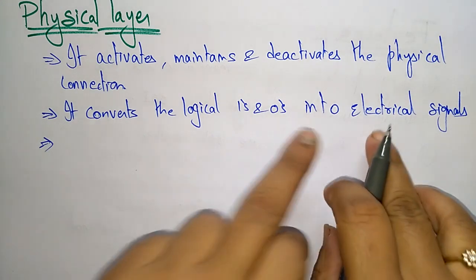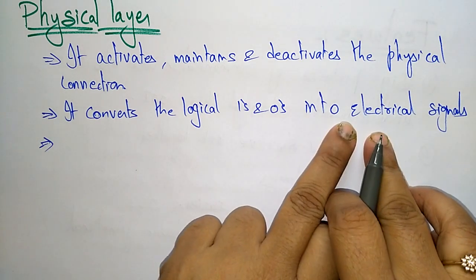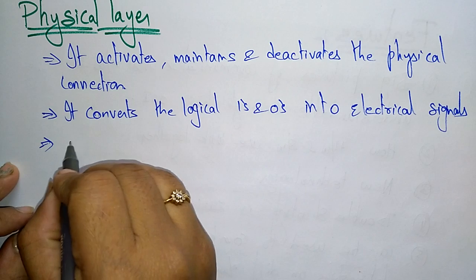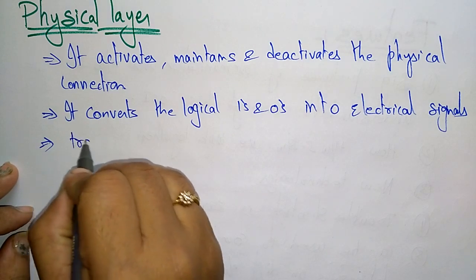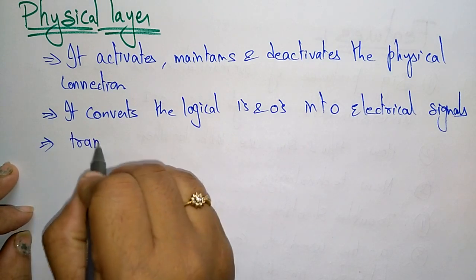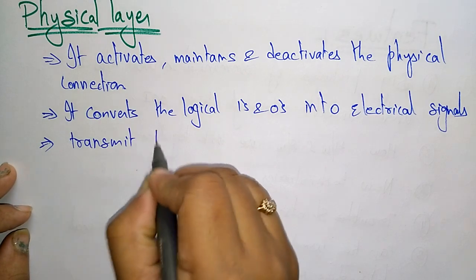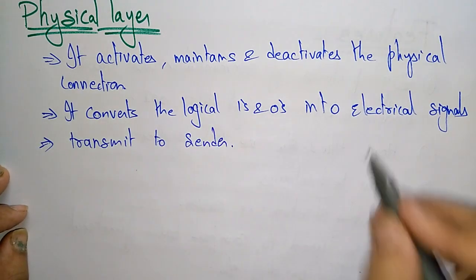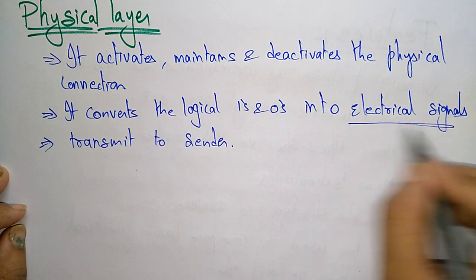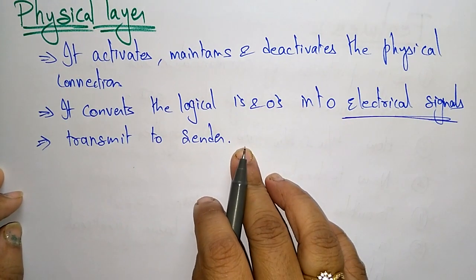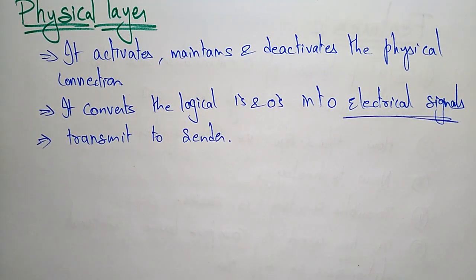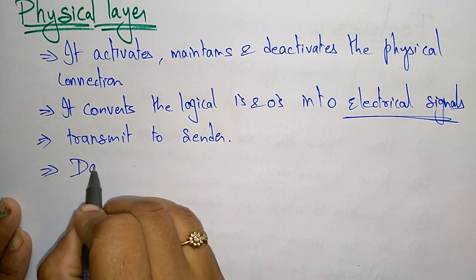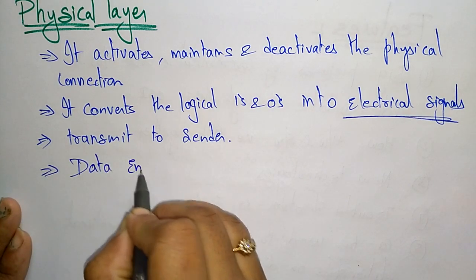The physical layer transmits electrical signals over a communication channel. Whatever electrical signals the physical layer produces, those electrical signals will be transmitted to the sender. Data encoding is also done in this layer.